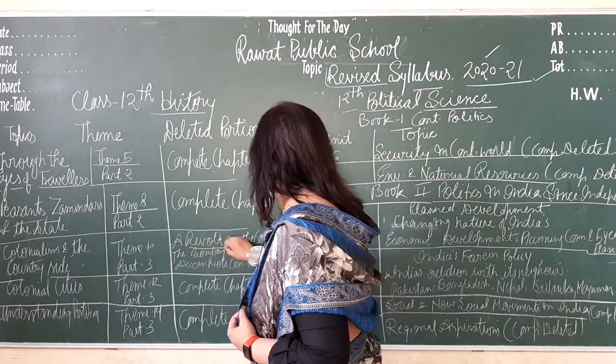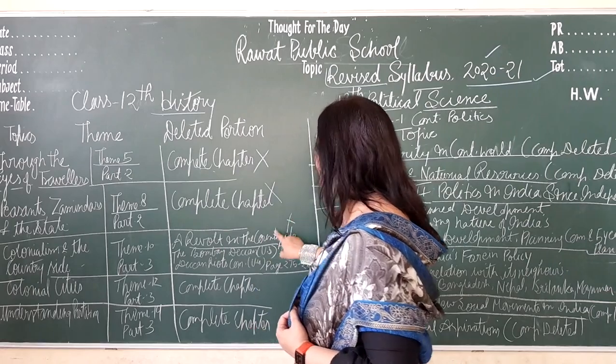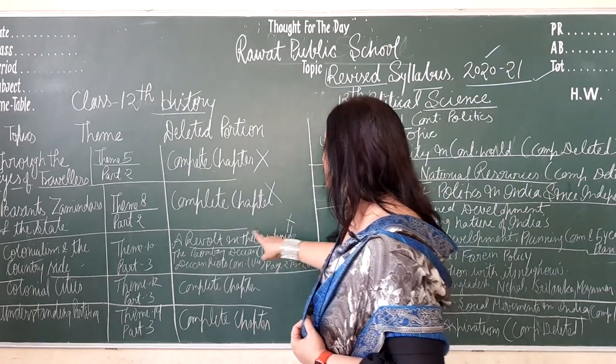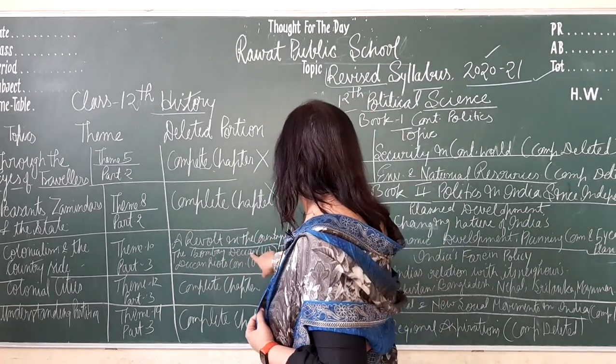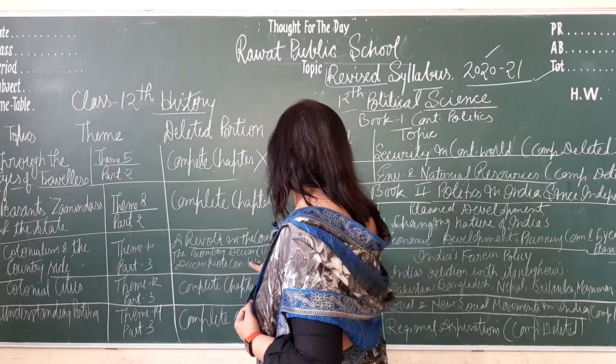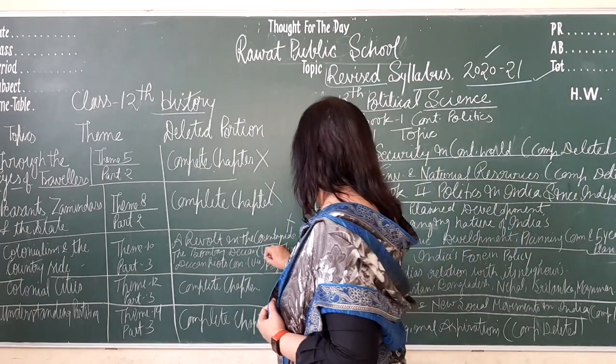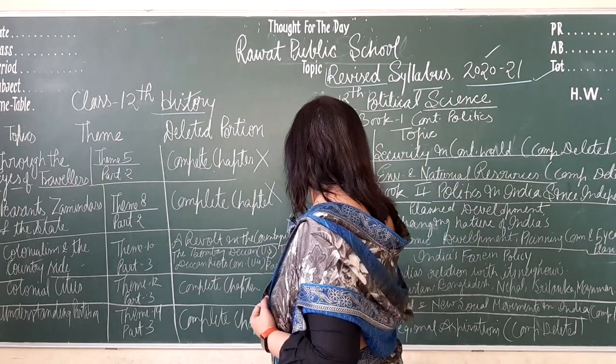This chapter is deleted. The Pompey Deacon Unit 3, the Deacon Rights Commission Unit 4 — this is deleted.